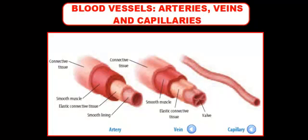Once the heart contracts and sends blood outside to the body, the blood has to be carried through something. We have a network of tubing called blood vessels, and there are three types of blood vessels we're going to learn about in this vodcast.